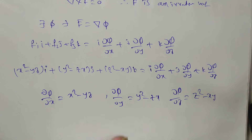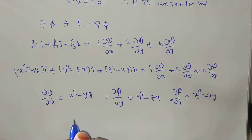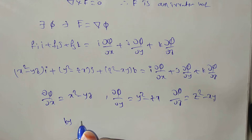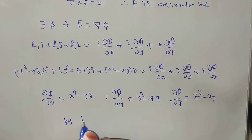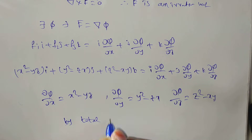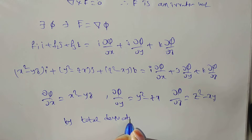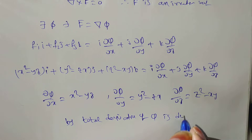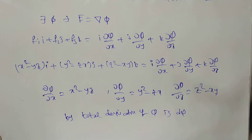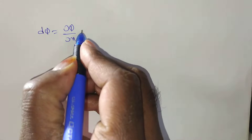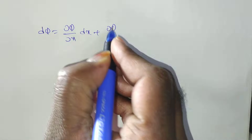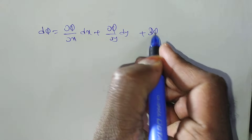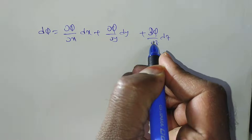Now, how we will get the scalar potential function is by finding dπ, the total derivative of π: dπ = (∂π/∂x)dx + (∂π/∂y)dy + (∂π/∂z)dz.